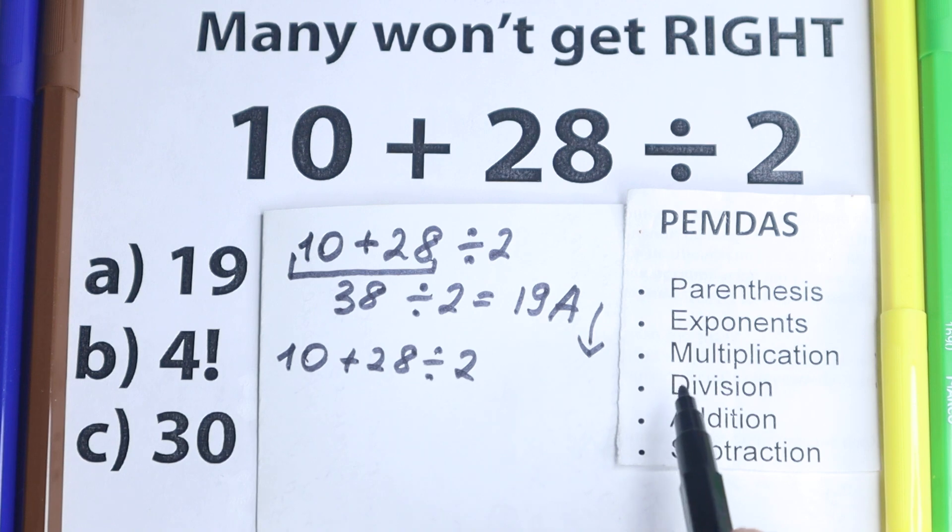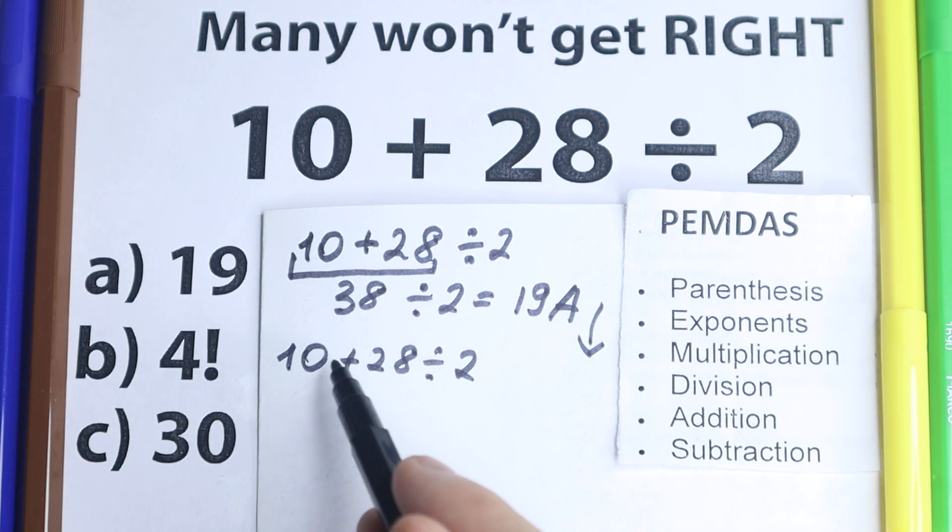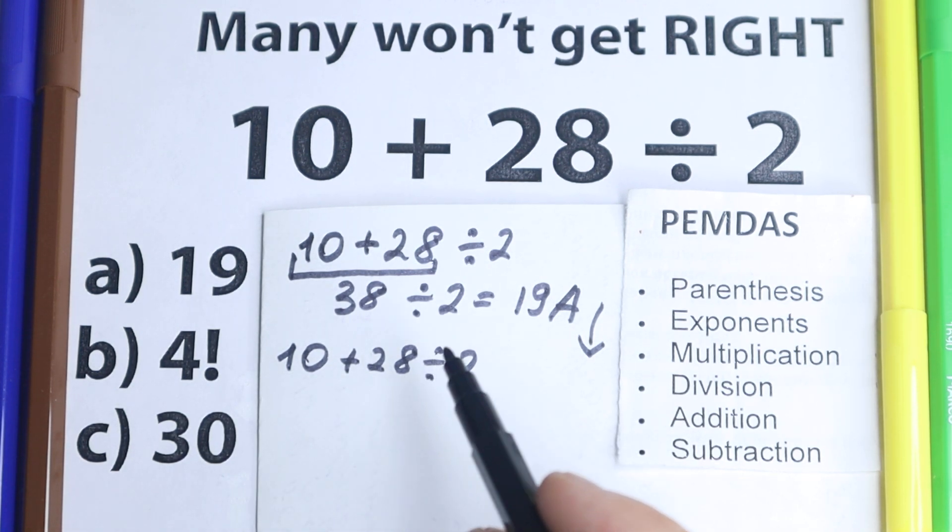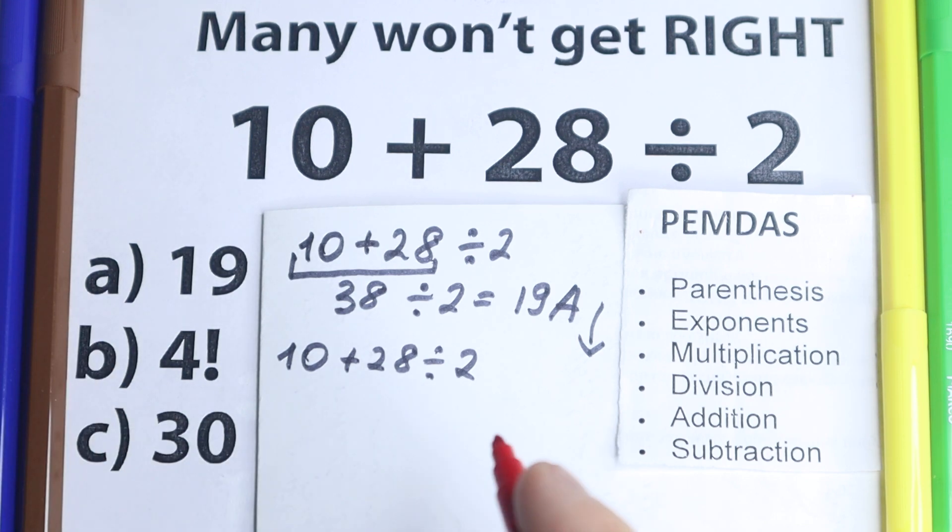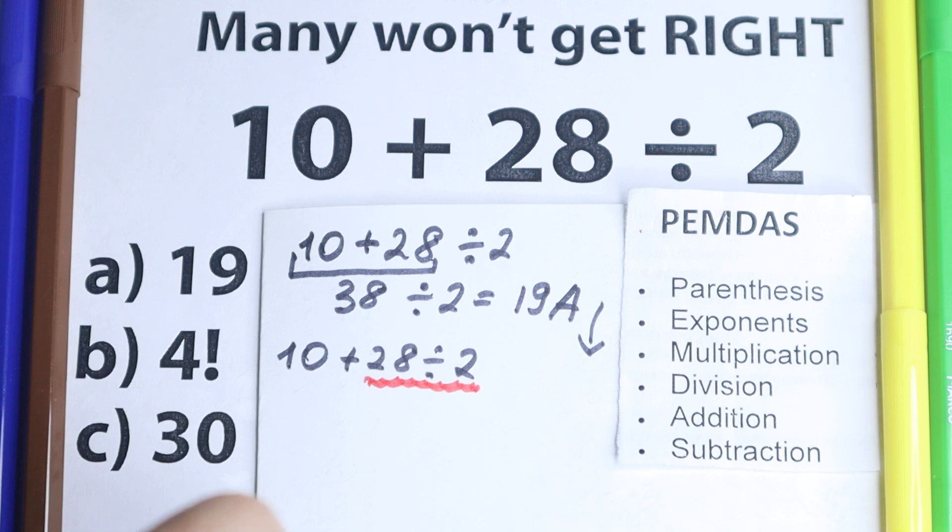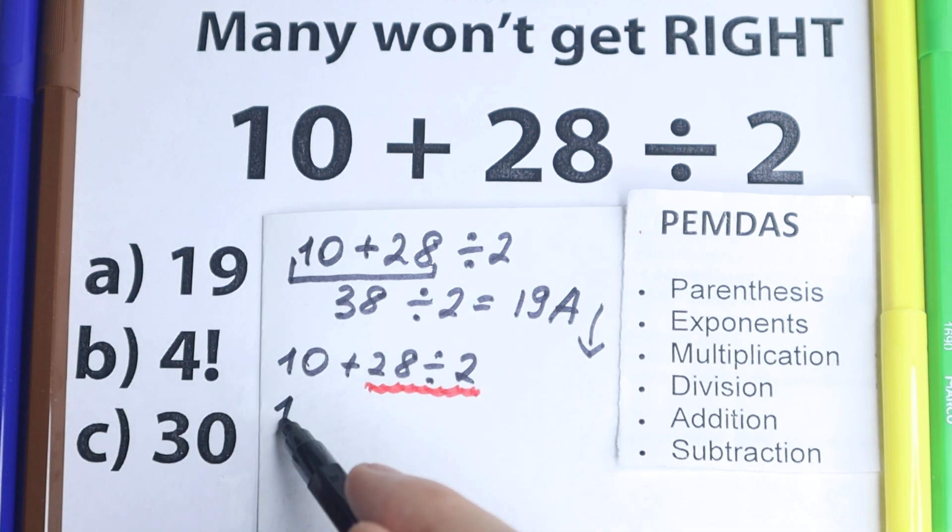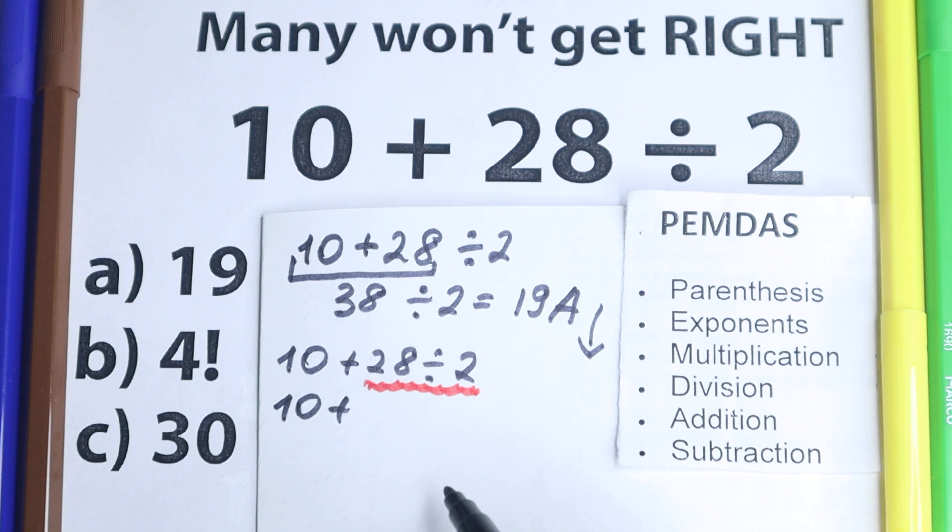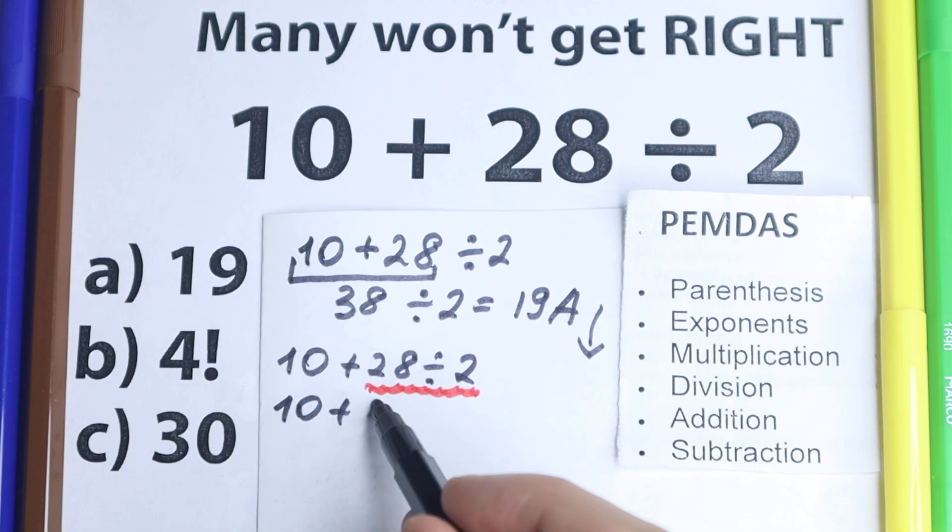Are there any multiplication or division signs? Let's look at it. Right here, addition. We have this division sign. So we need to start from this division. And this changes everything. Because right here, if we start from division, we have 10 plus 28 divided by 2 equal to 14, so 10 plus 14, which equals 24.